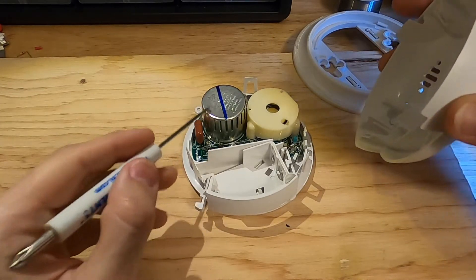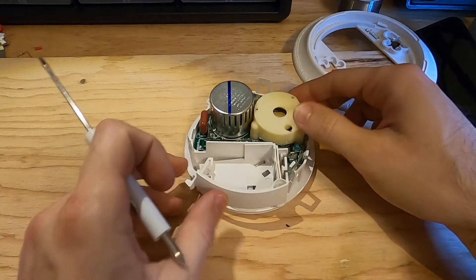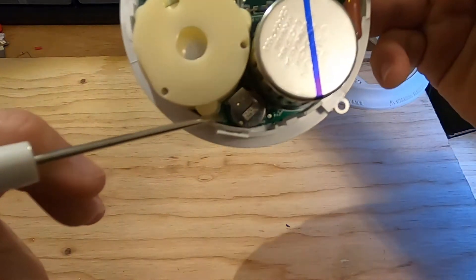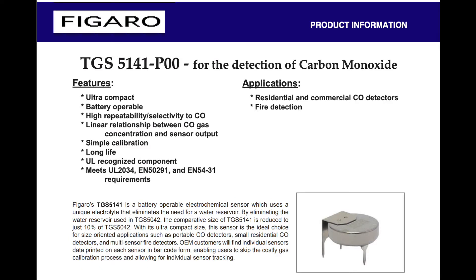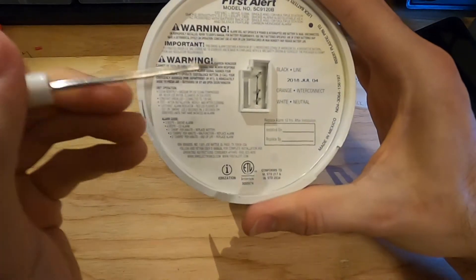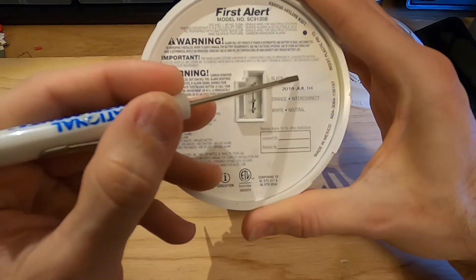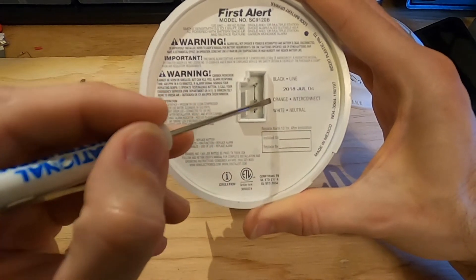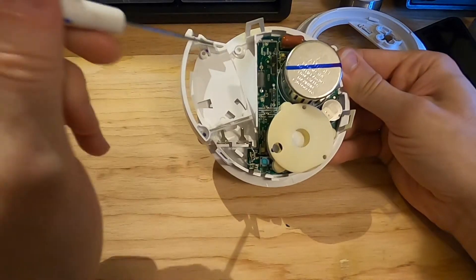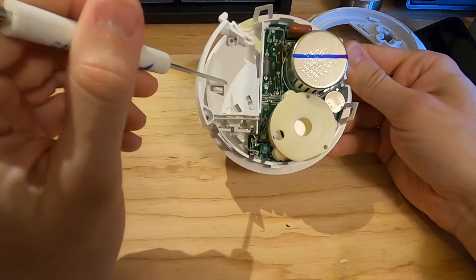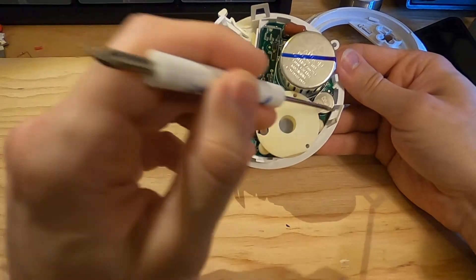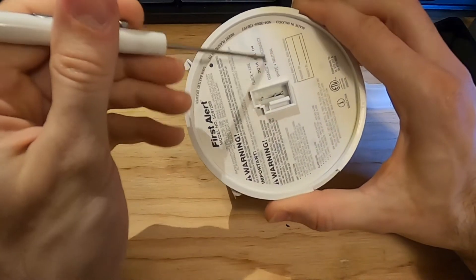This is the radioactive source for the smoke detection. I'm not going to mess with it because it could be a bit dangerous — I don't want to get contaminated, even if it's not a strong one. This little thing here looks like a battery, but it's not a battery. It's actually an electrochemical sensor which detects carbon monoxide in the air. On the back of the sensor, we have the neutral connection, the line connection, and the wire of interest today — the orange wire, the interconnect wire. What we're going to try to do is supply power through the 9-volt battery connection on the PCB, trigger the CO sensor, and see what type of signal goes on the orange interconnect wire.